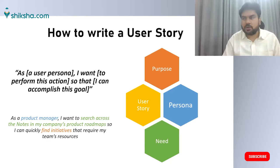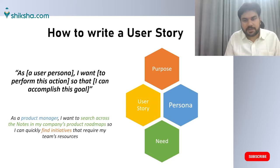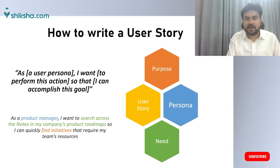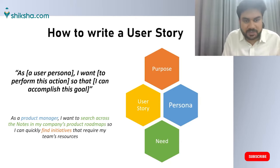So how do you write a user story? Once your product strategy is defined and you are moving ahead with development, you have to convey a user story from the perspective of the end user. A user story includes three parts: a purpose, a persona, and a need. The basic template is: as a [user persona], I want to perform this action, so that I can accomplish this goal.